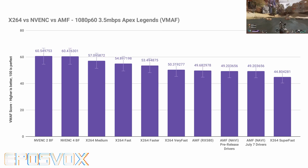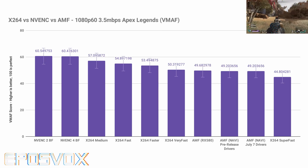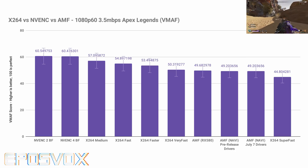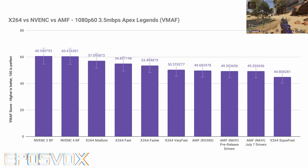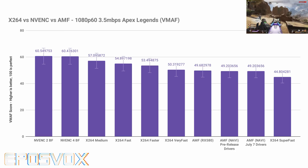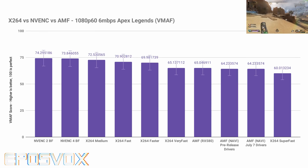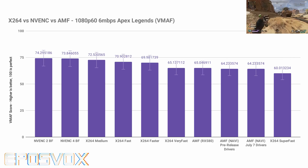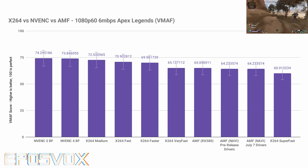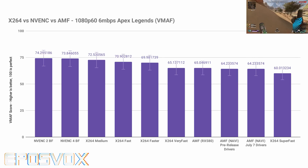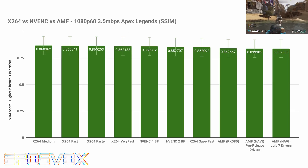At 3.5 Mbps, the RX 5700 scores around 49 in VMAF, Superfast scores around 44, and Veryfast around 50. At 6 Mbps, the 5700 scores 64.23, Veryfast scores around 65, and Superfast around 60 — so again between Superfast and Veryfast. The same is reflected in the SSIM scores as well. It's scoring worse than or barely above Superfast, which is unfortunate.